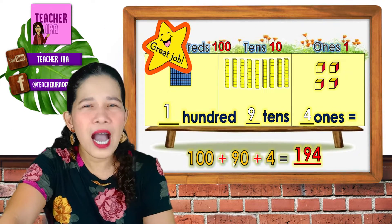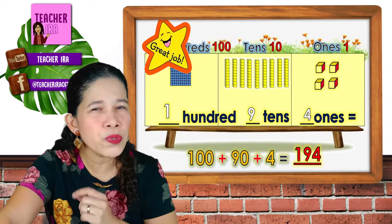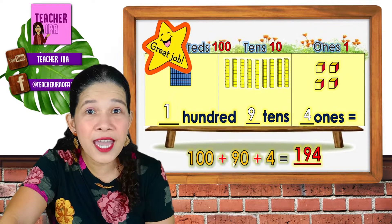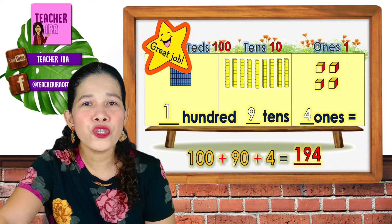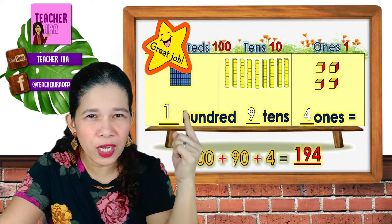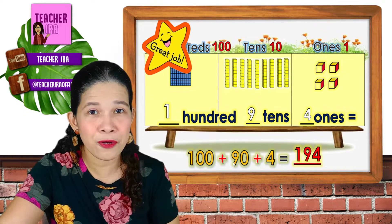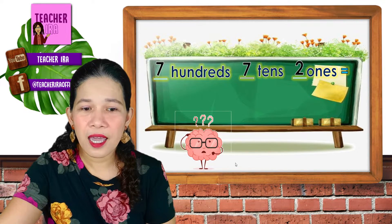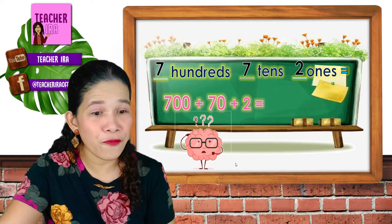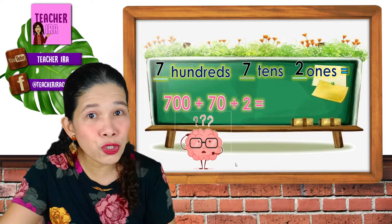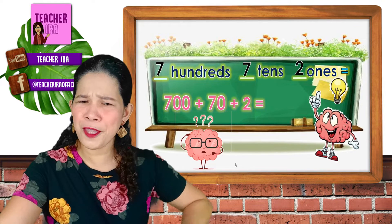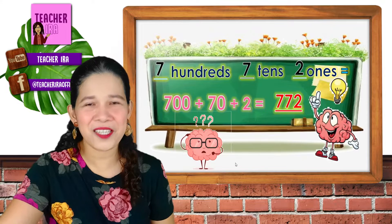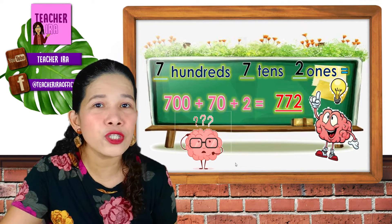Now I am going to test if you really understood the lesson. This time, I will not put any objects — you will not see the chart, but you will just imagine it in your mind. 700s, 7 tens, and 2 ones. That means 700 plus 70 plus 2. What do you think is the number? Yes, you are correct — that's 772!